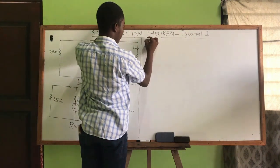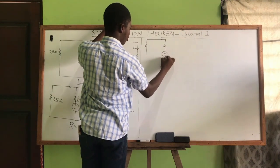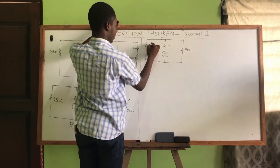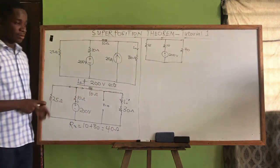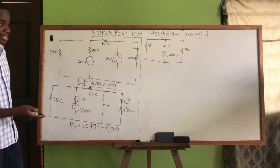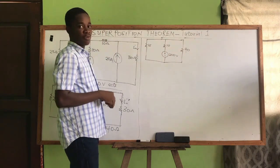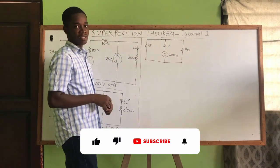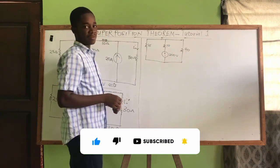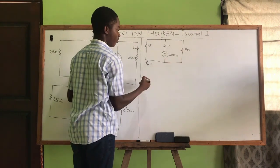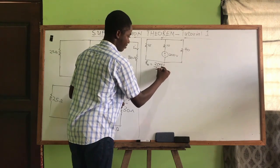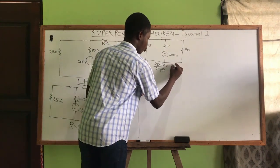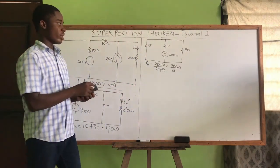Drawing the equivalent circuit: we have the 25 ohms and the 40 ohms in parallel (since current divides between those two branches), with the 10 ohms and 200V source in series. The parallel combination Rₚ = (25 × 40) / (25 + 40) = 1000/65 = 200/13 ohms.